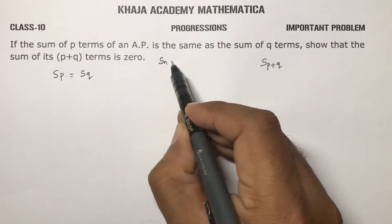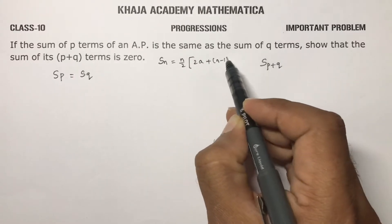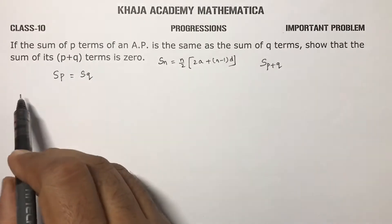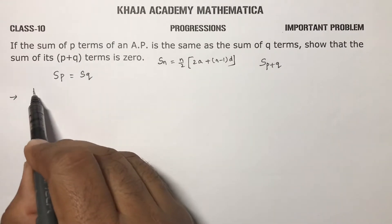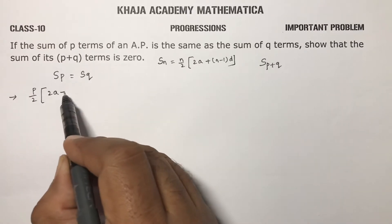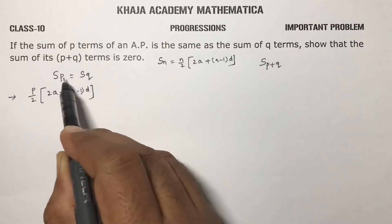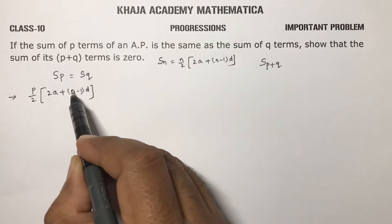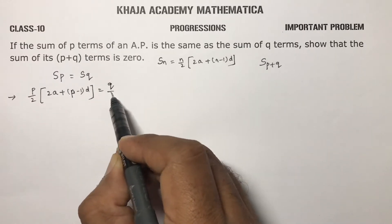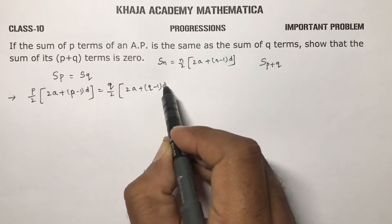The Sn formula is n by 2 into 2a plus n minus 1 into d. Now Sp will be p by 2 into 2a plus p minus 1 into d, because in place of n we write p. And Sq will be q by 2 into 2a plus q minus 1 into d.